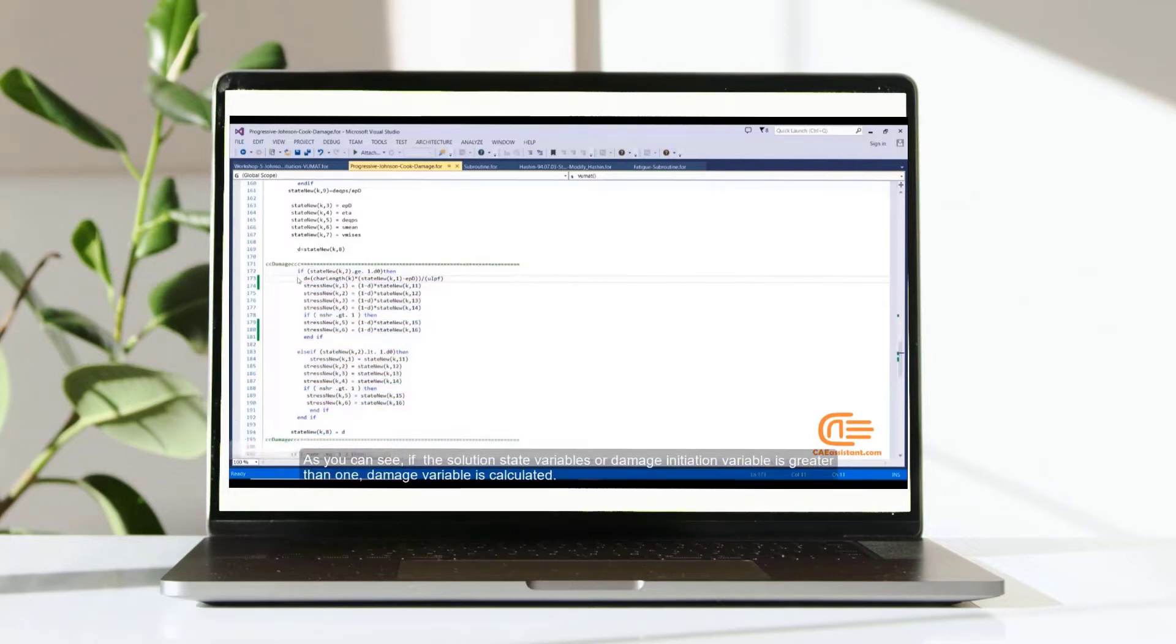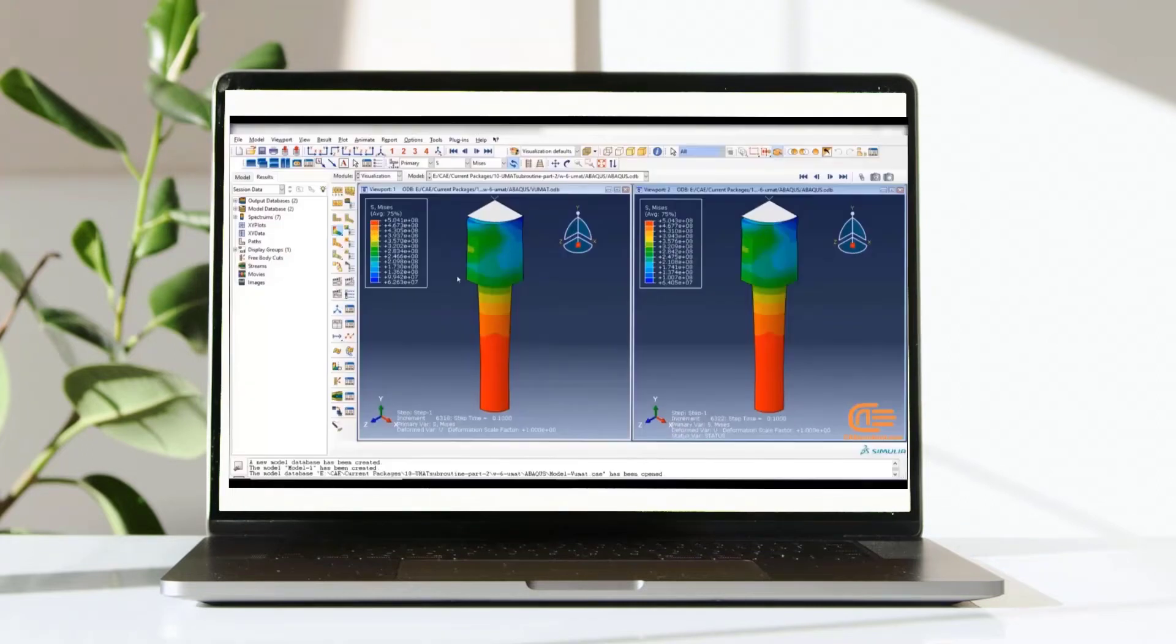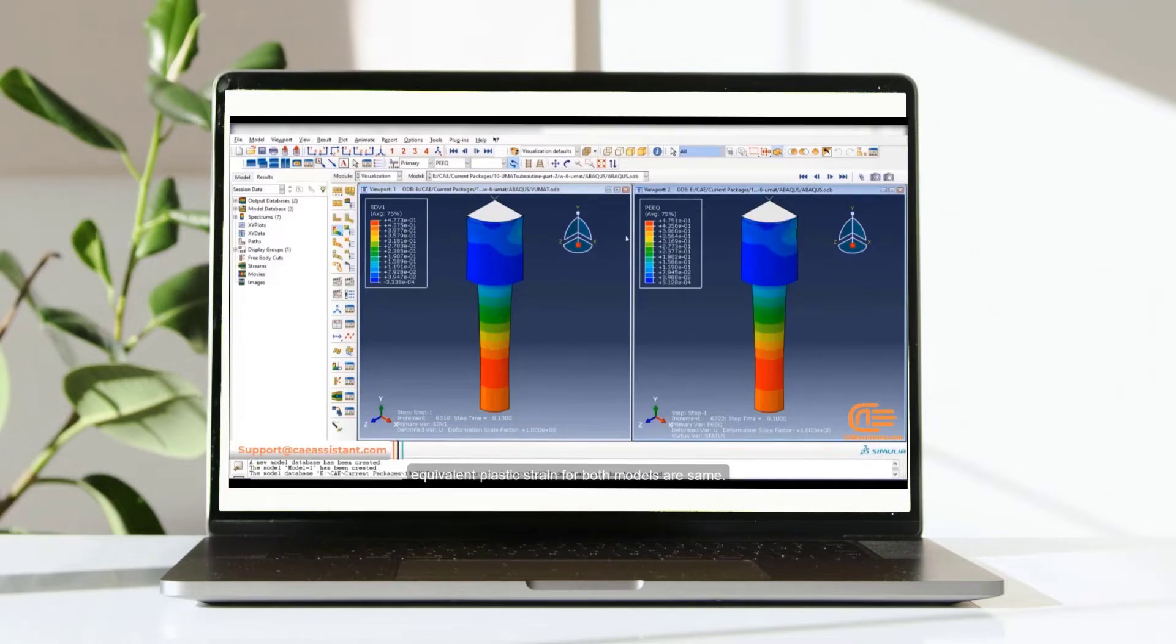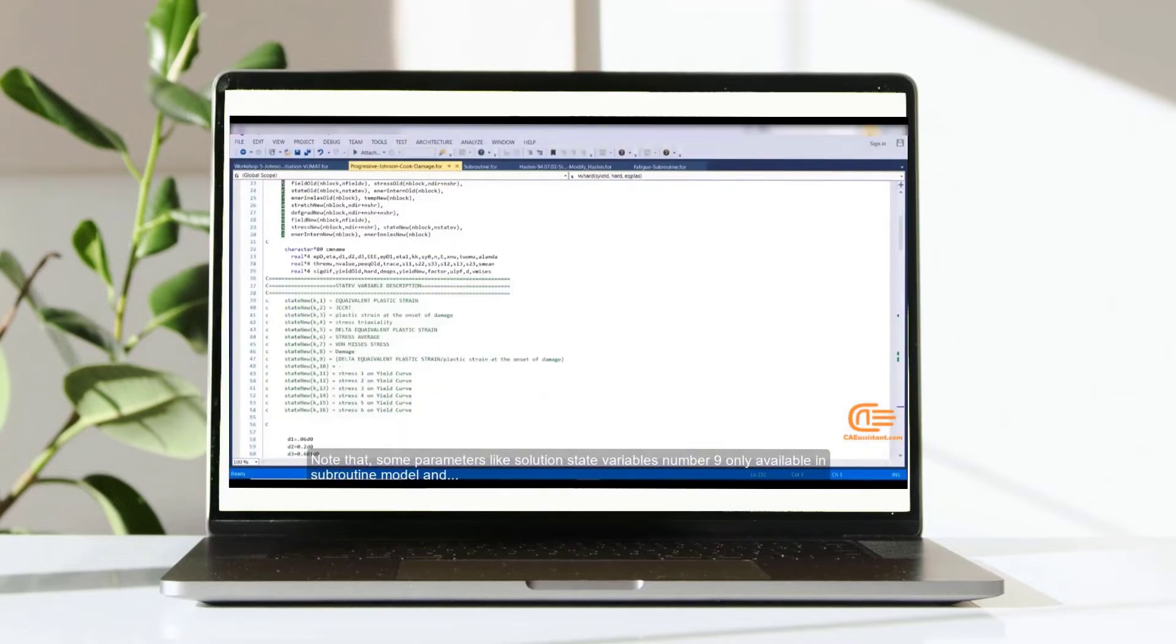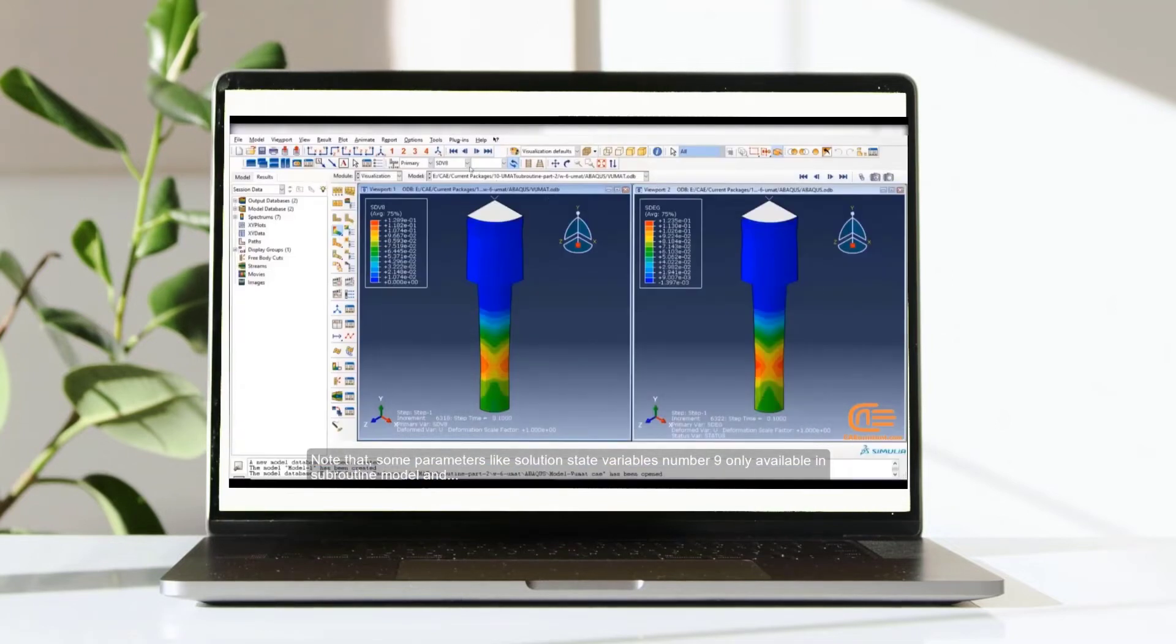As you can see, if the solution state variables or damage initiation variable is greater than 1, damage variable is calculated. As you can see, the stress magnitudes and contours are same for two models. Equivalent plastic strain for both models are same. In addition, contour and magnitude of damage parameter for both models are the same. It is the difference part between this workshop and previous one. Note that some parameters like solution state variables number 9 only available in subroutine model.